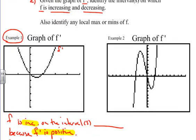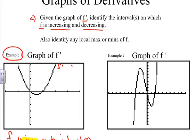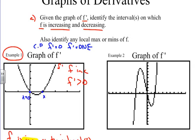In example one, to answer the question on which intervals f is increasing or decreasing: f is increasing if f prime is greater than zero. Let's look at this graph and determine where it's greater than zero. We have to find the critical points — critical points are when f prime equals zero or when f prime doesn't exist. Looking at the graph of f prime, our critical points are approximately at x equals zero and x equals one. From negative infinity to zero, f prime is positive, therefore f is increasing.